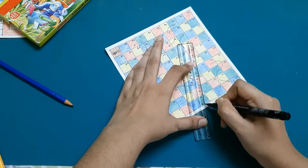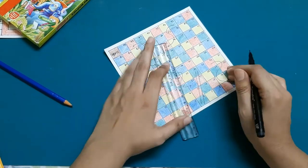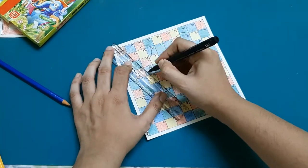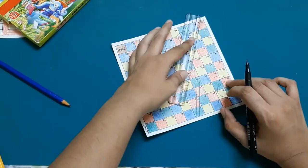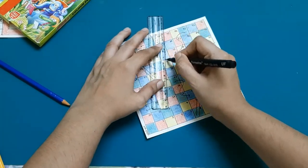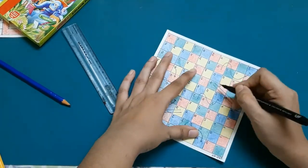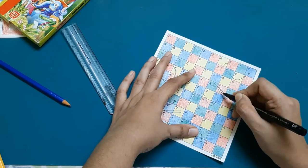Now, with the help of a ruler, I am making the ladders. It is very easy to make.